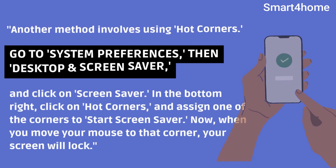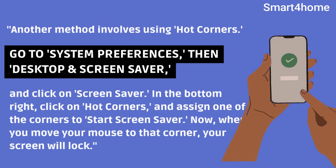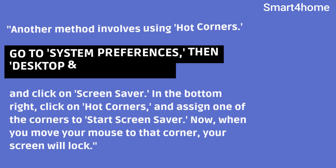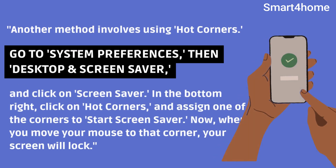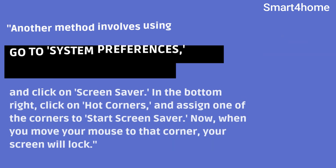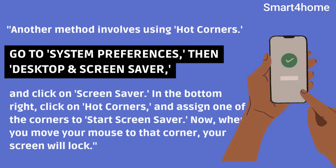Another method involves using Hot Corners. Go to System Preferences, then Desktop & Screen Saver, and click on Screen Saver. In the bottom right, click on Hot Corners and assign one of the corners to start Screen Saver. Now, when you move your mouse to that corner, your screen will lock.